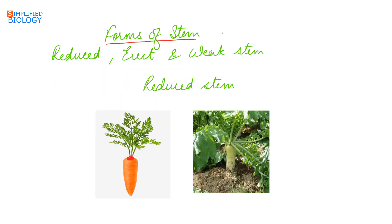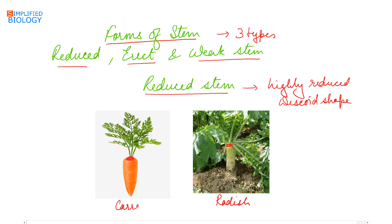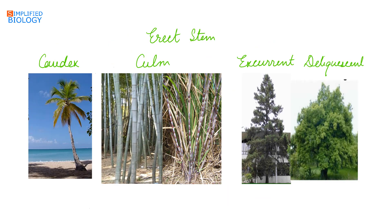Stems can be divided into three types: reduced stem, erect stem, and weak stem. In the reduced stem, the stem is highly reduced, discoid in shape, and green in color, lying just above the root. This reduced stem is seen in radish and carrot — the root is present below and the reduced stem bears the leaves above.